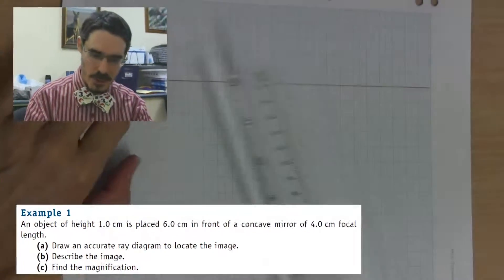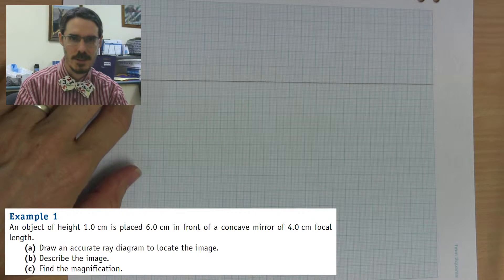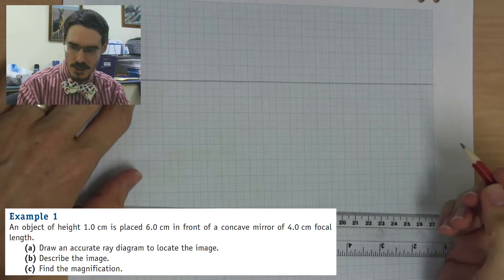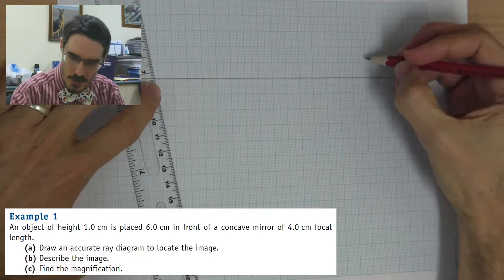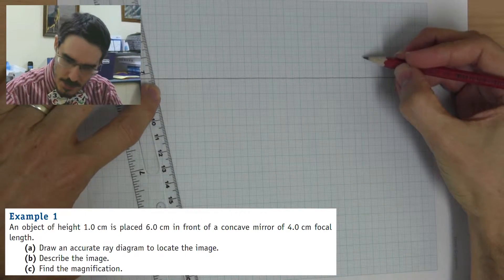So, first off, draw the principal axis. Use a nice sharp pencil. Draw in your mirror, it doesn't have to be perfect, it just has to be representative.